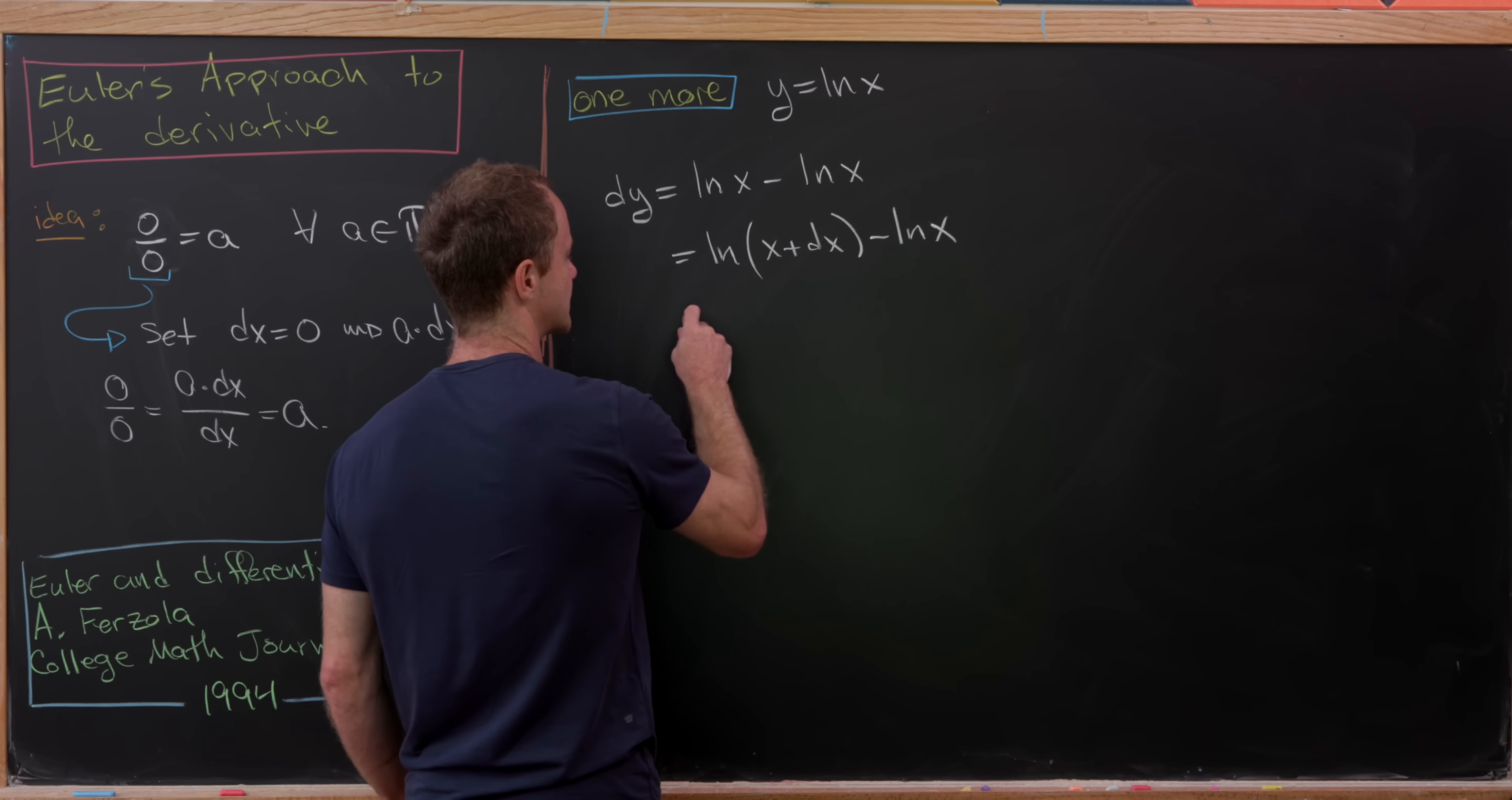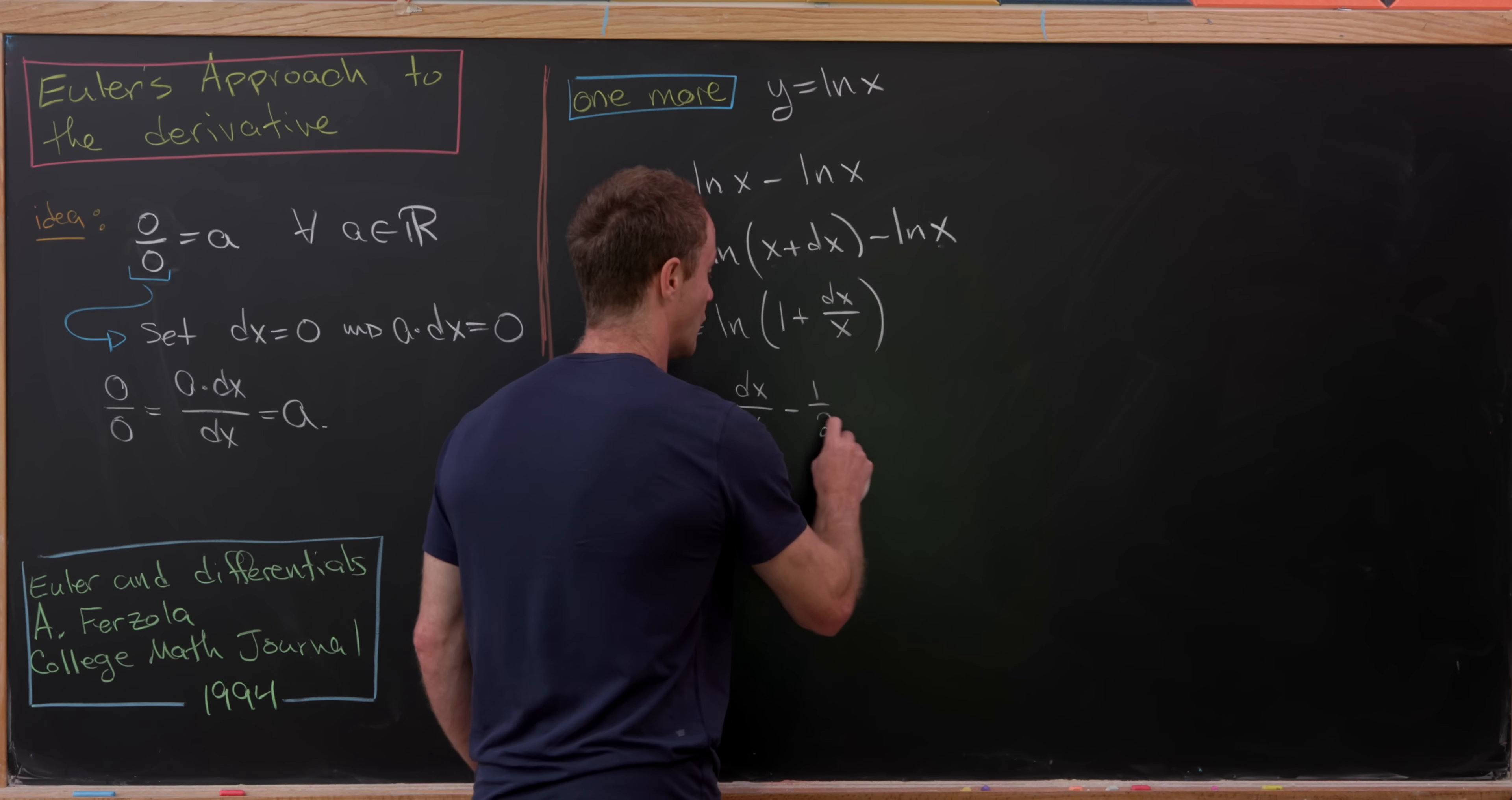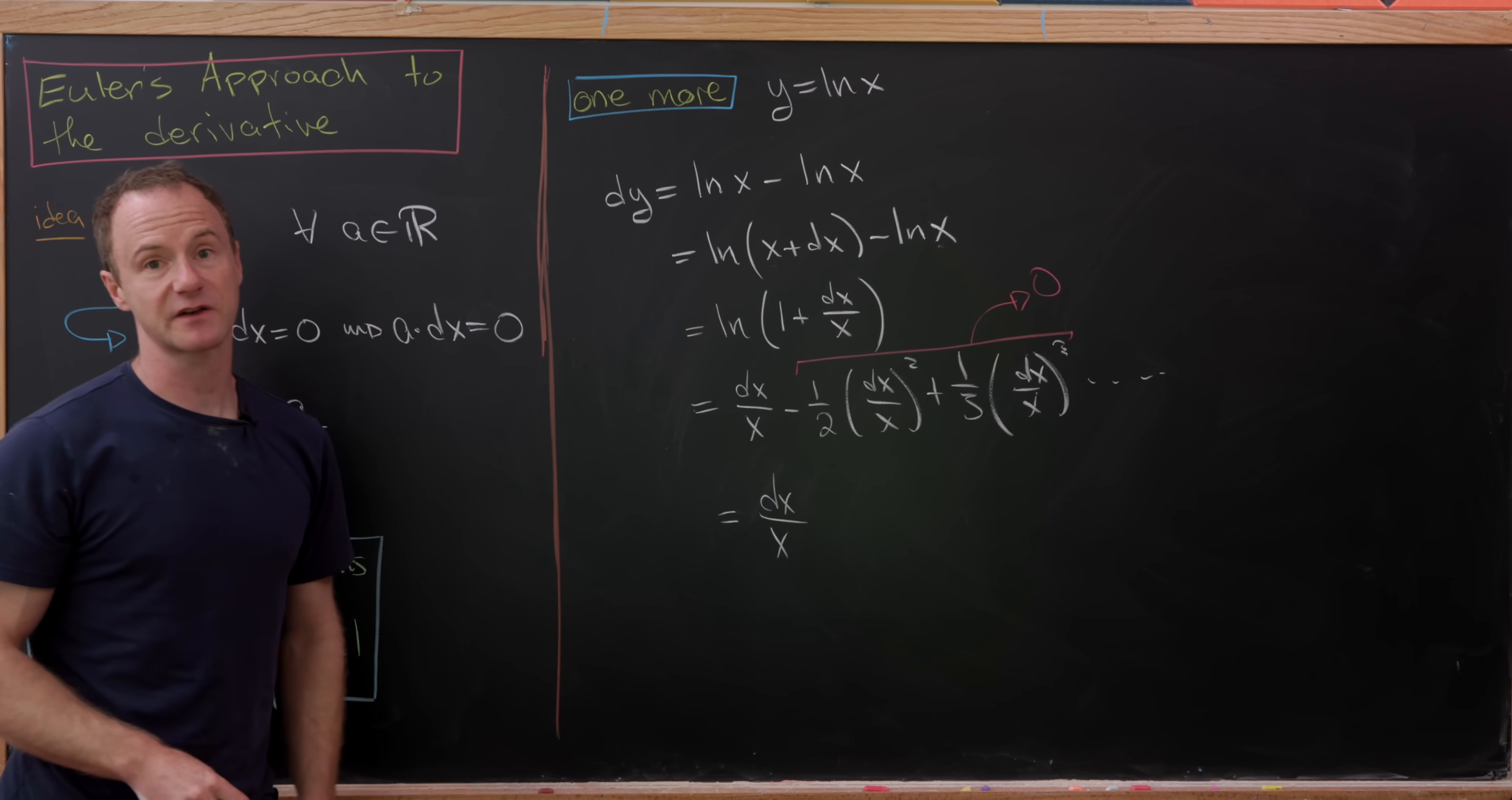But now we can use logarithm rules to rewrite this as the natural log of X plus DX over X, which simplifies to one plus DX over X. And then we'll use a series expansion of the natural log, which may seem a bit circular, but the series expansion of natural log was known before calculus. So it's actually kind of okay. And so we can rewrite this as DX over X minus one half times DX over X squared plus one third times DX over X cubed, and so on and so forth. But now we're going to do our old favorite trick for all of this, and that is disregard the higher powers of DX. So think of these as zero. And notice we're left with DX over X, which, of course, is exactly what we would expect for the derivative of the natural log.